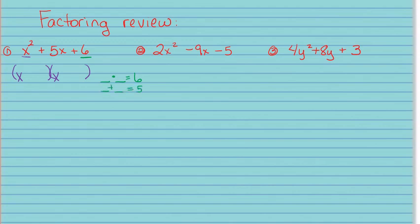That would be positive two and positive three, so positive two goes here and positive three goes there. We should always check it by FOIL. If I multiply this out I get x squared plus 3x plus 2x plus 6, which gives me x squared plus 5x plus 6, so it checks.